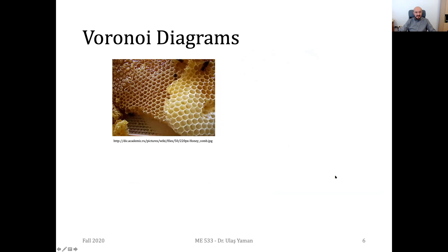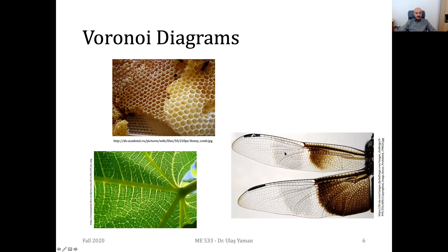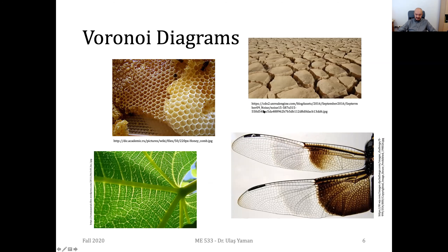We also have examples of Voronoi diagrams in nature — in the skin of animals, in the wings of insects, on leaves, and even on moths. We always have such Voronoi-like patterns in nature. They are all Voronoi cells, and the whole collection forms the Voronoi diagram.